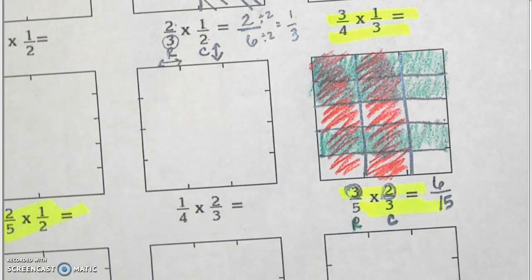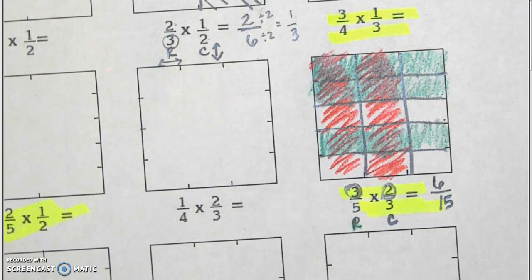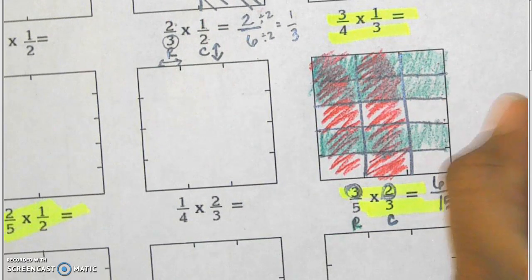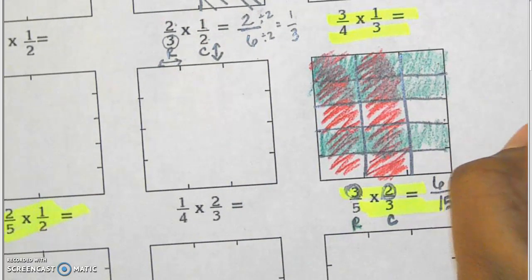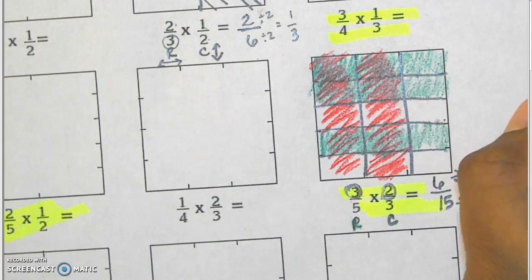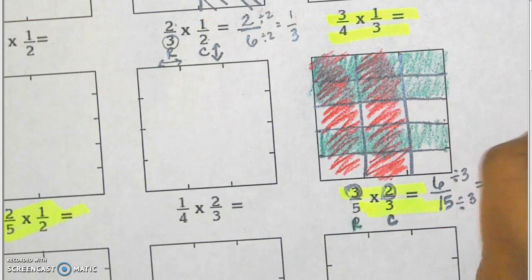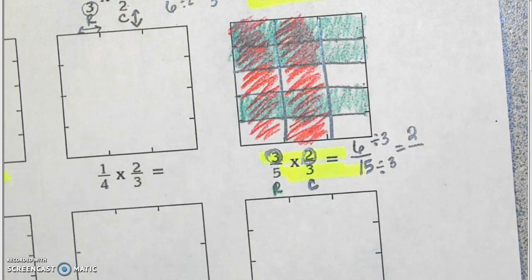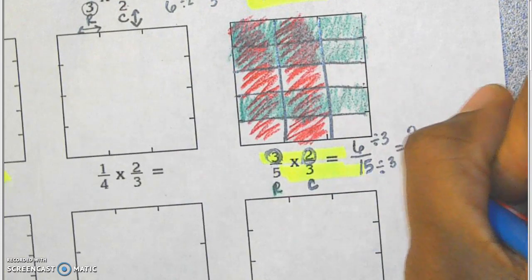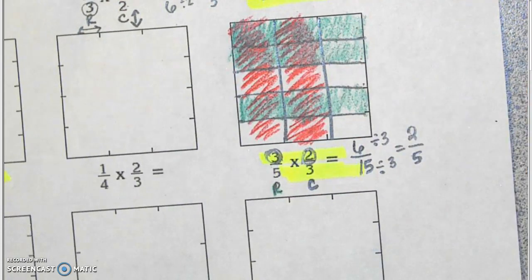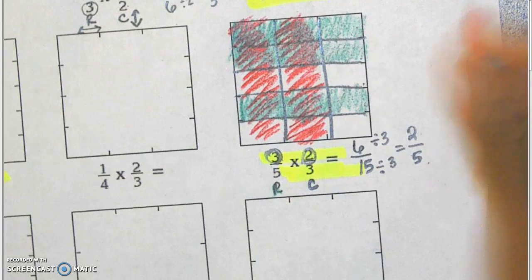Then you always look to see if you can simplify if you know the GCF or you know a common factor. I can see that both of these can be evenly divided by three. There are two groups of three in six. And there are five groups of three in fifteen. So two-fifths in simplest form.